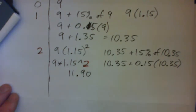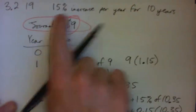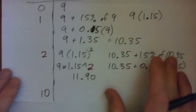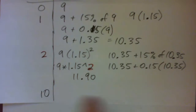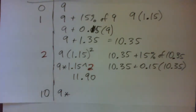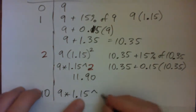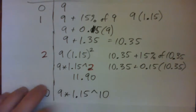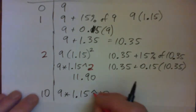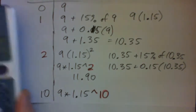We're looking at ten years later because it's increasing 15% each year for 10 years. So the price after ten years would be nine times 1.15 to the power of ten, which gives us $36.41.